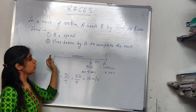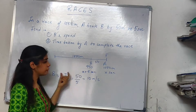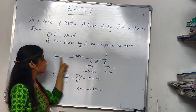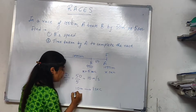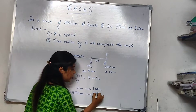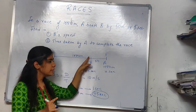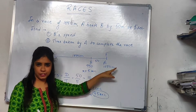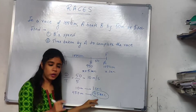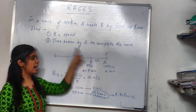They are also asking: what is the time taken by A to complete the race? We know B's speed is 10 meters per second. B has covered a total of 950 meters, so 950 meters will take 95 seconds. So B took 95 seconds to reach 950 meters. At that same moment, A reached the final destination. So A also took 95 seconds to finish the race.